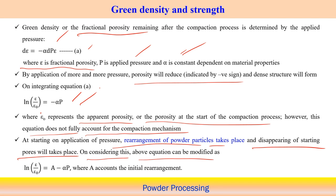The equation can be modified to account for the initial rearrangement of powder particles during compaction by introducing a constant term. This gives a more refined equation that better explains the green density or fractional porosity remaining after the compaction process.